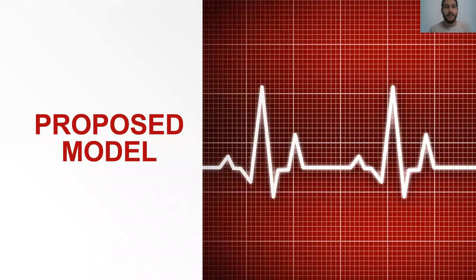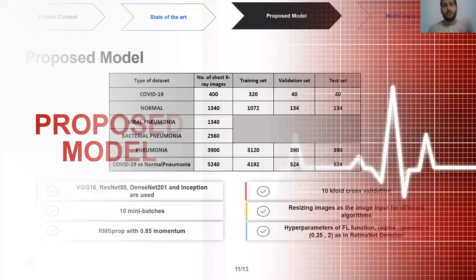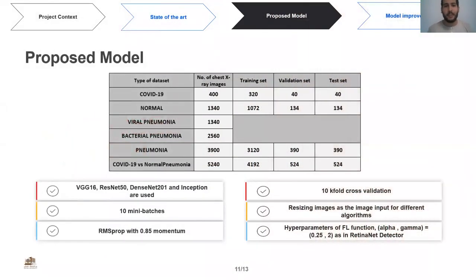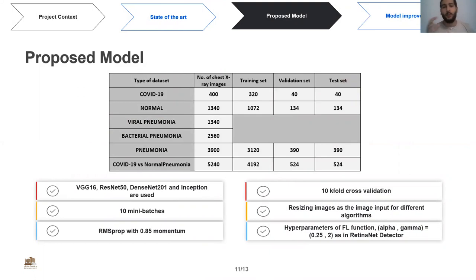After shedding light on this concept, let's see how the proposed model was built and the results obtained. This table summarizes the distribution of images into training, validation, and test sets. VGG-16, ResNet-50, ResNet-101, and Inception are the four pre-trained models used. SGD optimizer with 0.85 momentum, a mini-batch size of 10, and 10-fold cross-validation were also used. Regarding the focal loss hyperparameters, we set the pair (alpha, gamma) as (0.25, 2), as in the RetinaNet detector.